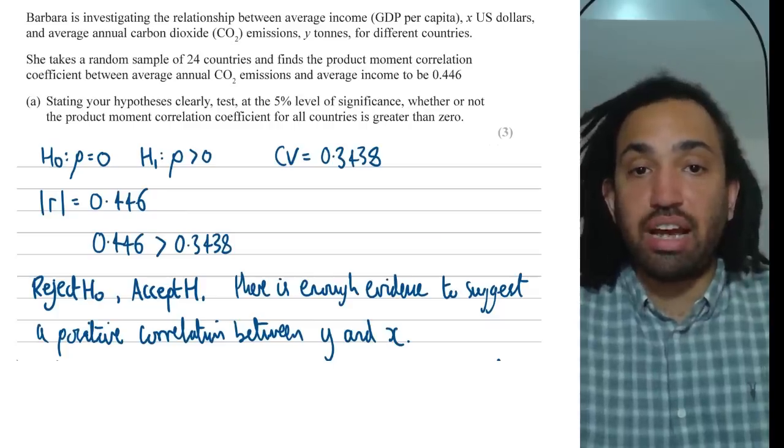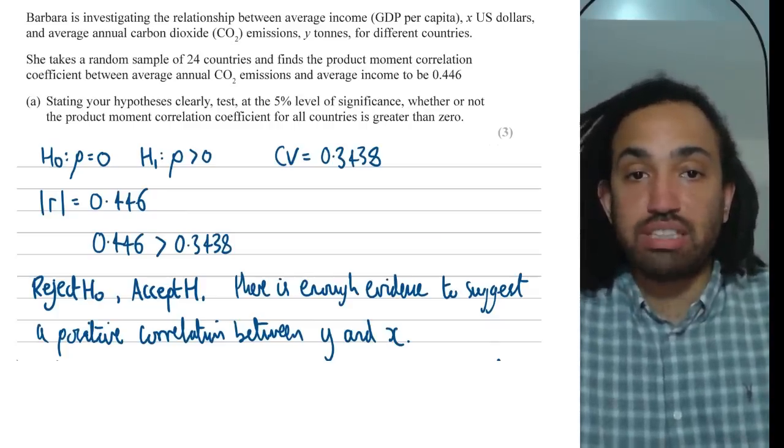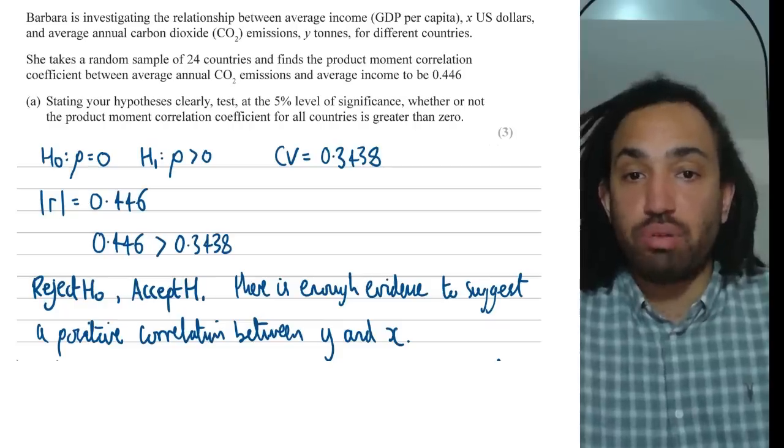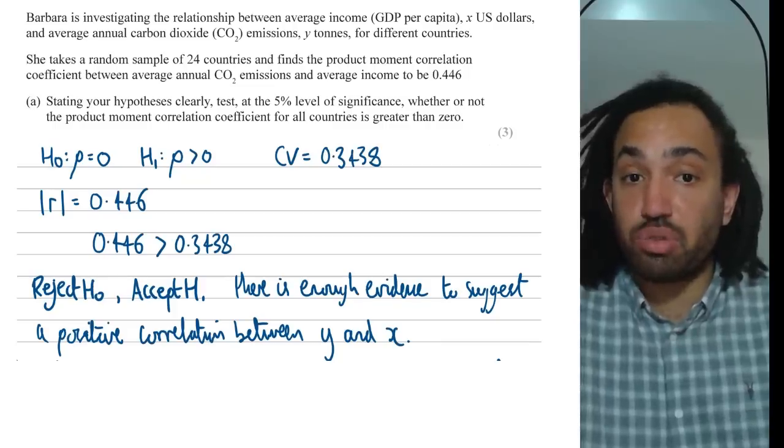Ok, next we're going to look at correlation and in the first example, again we start by writing out our hypotheses and because we're testing for positive correlation here I write that rho is greater than zero. I then go to my formula booklet page 37 to find the critical value.